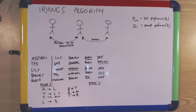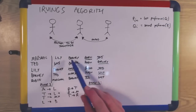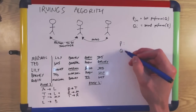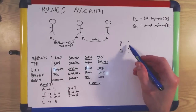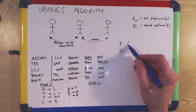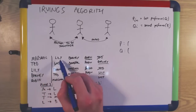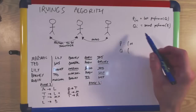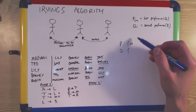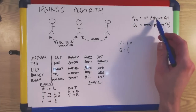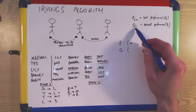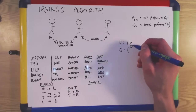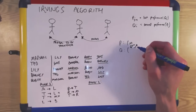Finally we move into phase three, where we take each person with more than one person left in their preference list and create two new lists P and Q. The first element of P is a person we pick who has a preference list of more than one person — we'll start with Marshall, shortened to M. The next element of P is the last preference of Q, and Q is defined as the second preference of P. So to go down we take the second preference, and to go across we take the last preference.